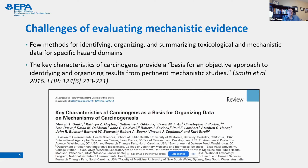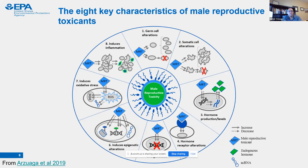We were fortunate to work with Martin Smith and others at a workshop at UC Berkeley in March of 2018. The result of that workshop was that we identified what we now call the eight key characteristics of male reproductive toxicants. These include: germ cell alterations, somatic cell effects, alterations or changes in hormone production or levels, alterations or changes in hormone receptors at the level of expression or function, genotoxicity, epigenetic changes, oxidative stress, and inflammation. We published that paper in 2019.